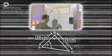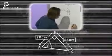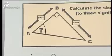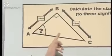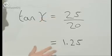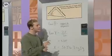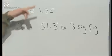The ratio to use is tan theta equals opposite over adjacent. I've decided to call my angle X. The opposite BC is twenty-five, and the adjacent is twenty. So tan X equals twenty-five divided by twenty, which is one point two five. Using the inverse tan function on my calculator, the angle is fifty-one point three degrees to three significant figures.